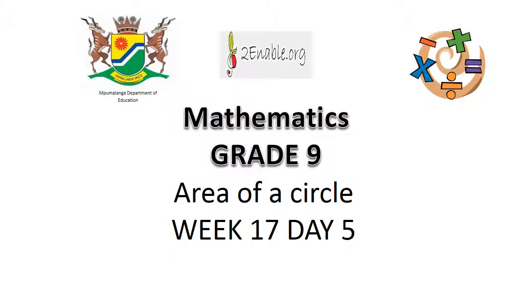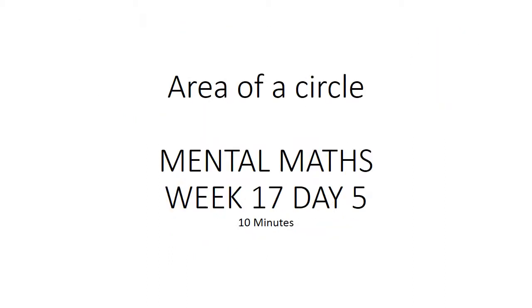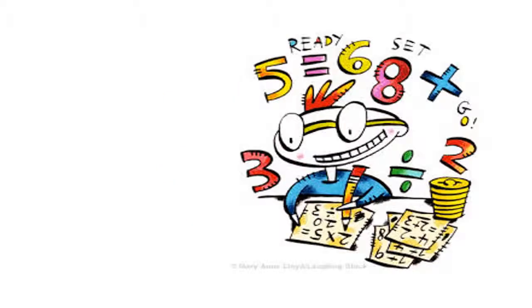Area of a circle. Mental math. Times tables. 6 times 12 equals 72. 6 times 8 equals 48.